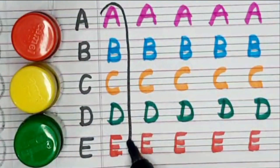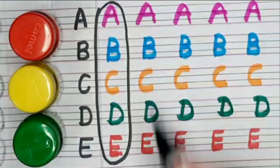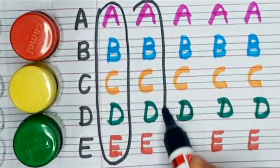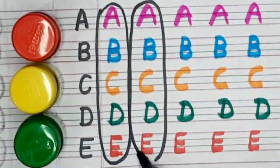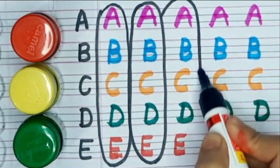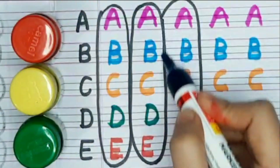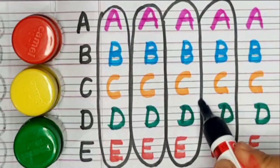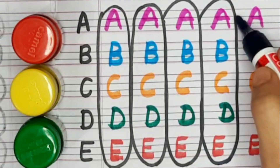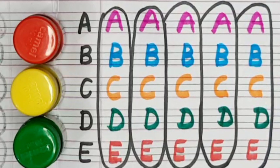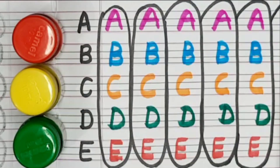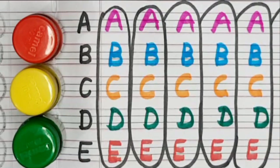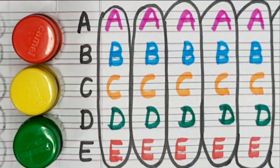A for apple, B for wall. A for apple, B for wall. C for cat, D for dog. C for cat, D for dog. E for elephant. A for apple, B for wall. C for cat, D for dog. E for elephant. C for cat, D for dog.